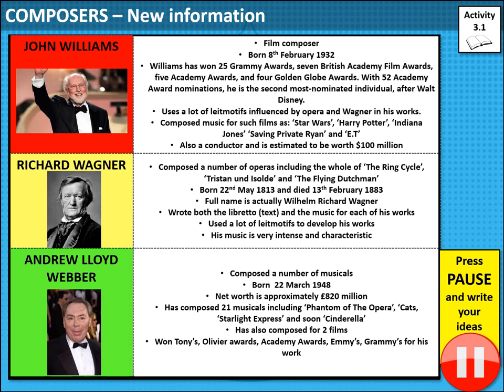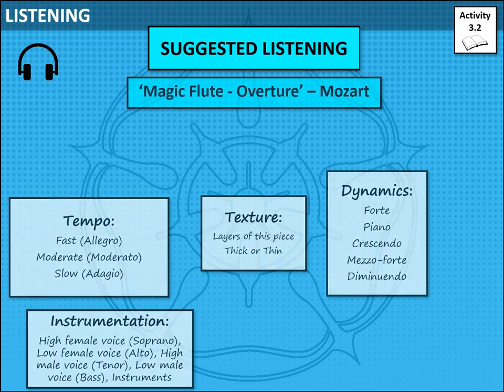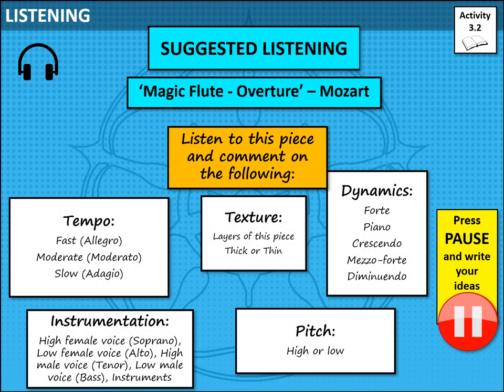Moving on then to some listening. I'd like you, using the link in the description box below, to listen to the Overture from The Magic Flute, written by Mozart. Really think about how you are going to do this — are you going to talk about all the elements of music? By now, Year 8, we should be using Italian terms: Allegro, Moderato, Adagio, Forte (which means loud), Piano (which means quiet), Crescendo (which means gradually getting louder). We shouldn't just be putting 'it was good' — you really need to push yourself. Think about the instruments that are in this. Pause the video now, listen to the Magic Flute Overture by Mozart, and write down your thoughts in full sentences.